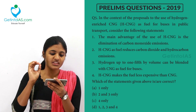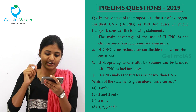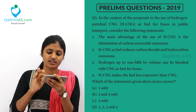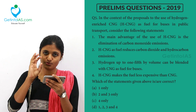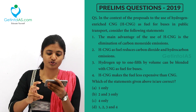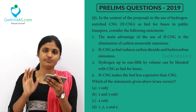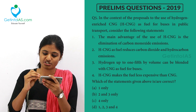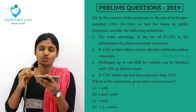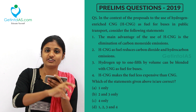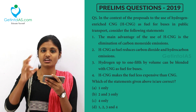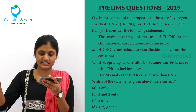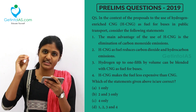The second option: HCNG as fuel reduces carbon dioxide and hydrocarbon emissions. This is correct because the term 'reduces' is used — it reduces carbon dioxide, carbon monoxide, and hydrocarbon emissions. Third: hydrogen up to one-fifth by volume can be blended with CNG as fuel for buses. There was a notification that hydrogen can be blended with CNG up to one-fifth of this level to be used as fuel for buses. This is how HCNG came about.